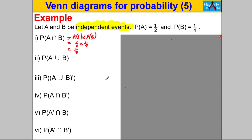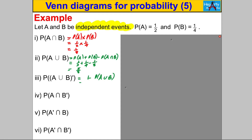For the probability of A or B, you could populate a Venn diagram, but you could also use the result: P(A∪B) = P(A) + P(B) − P(A∩B). That gives us one-half plus one-quarter minus one-eighth. Making them all eighths: four-eighths plus two-eighths minus one-eighth equals five-eighths. The probability of the complement of A or B is then one minus five-eighths, which equals three-eighths.